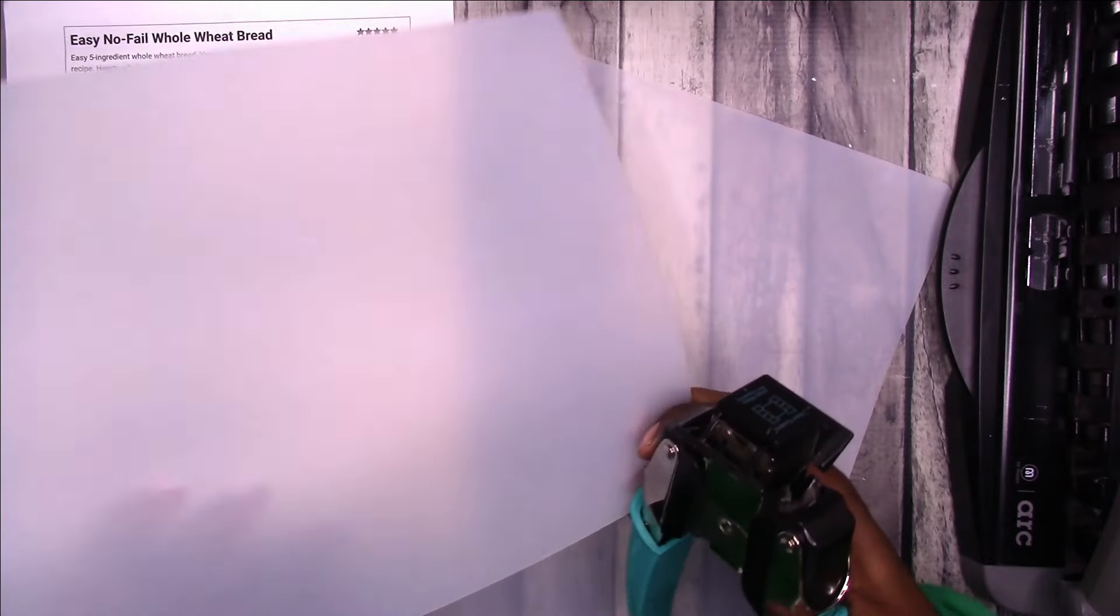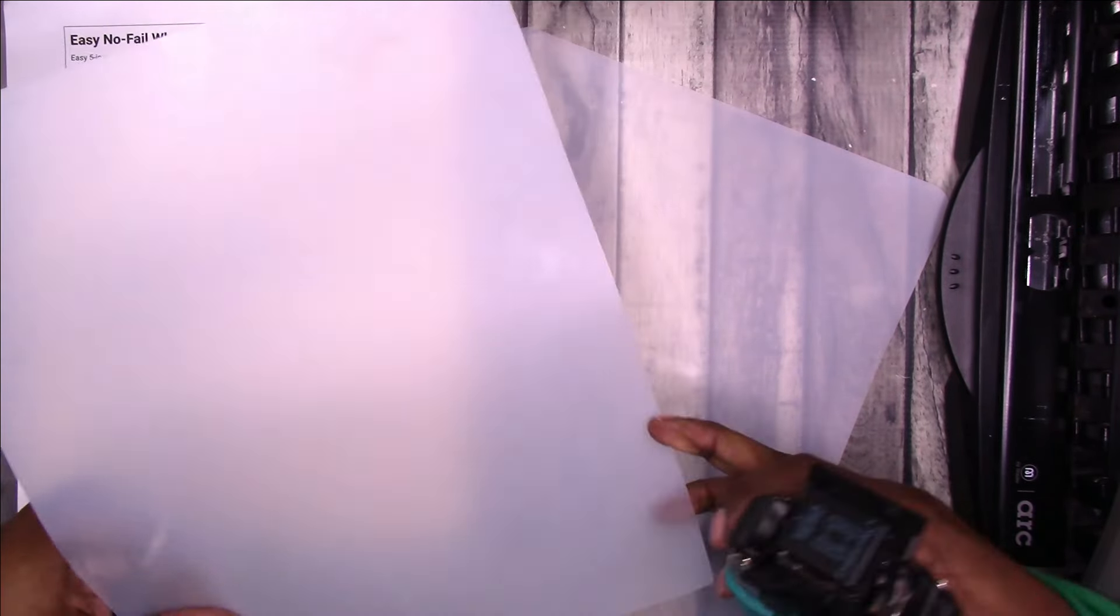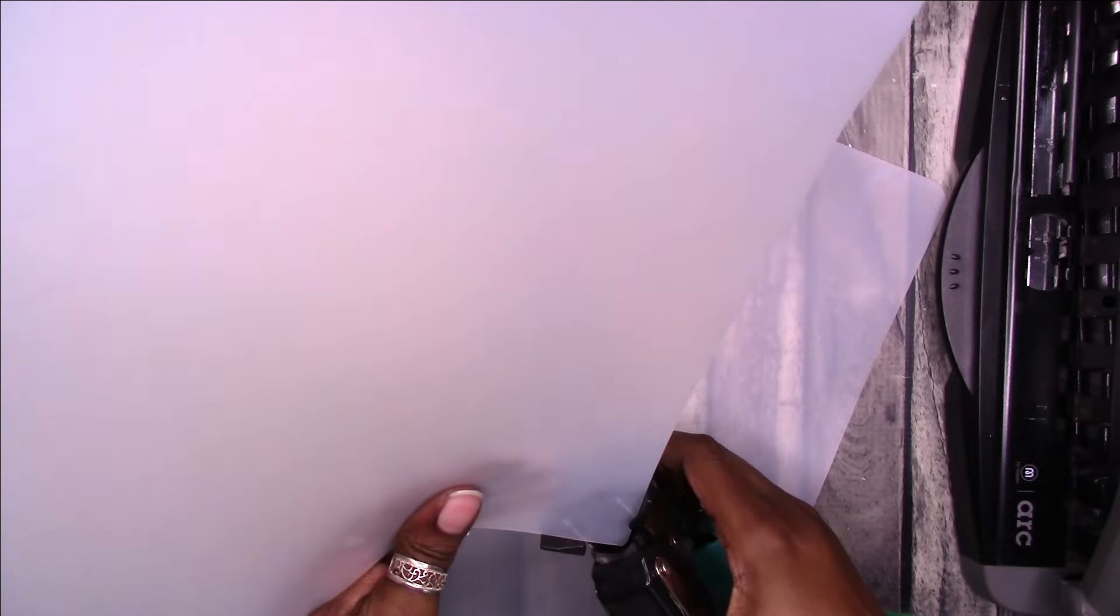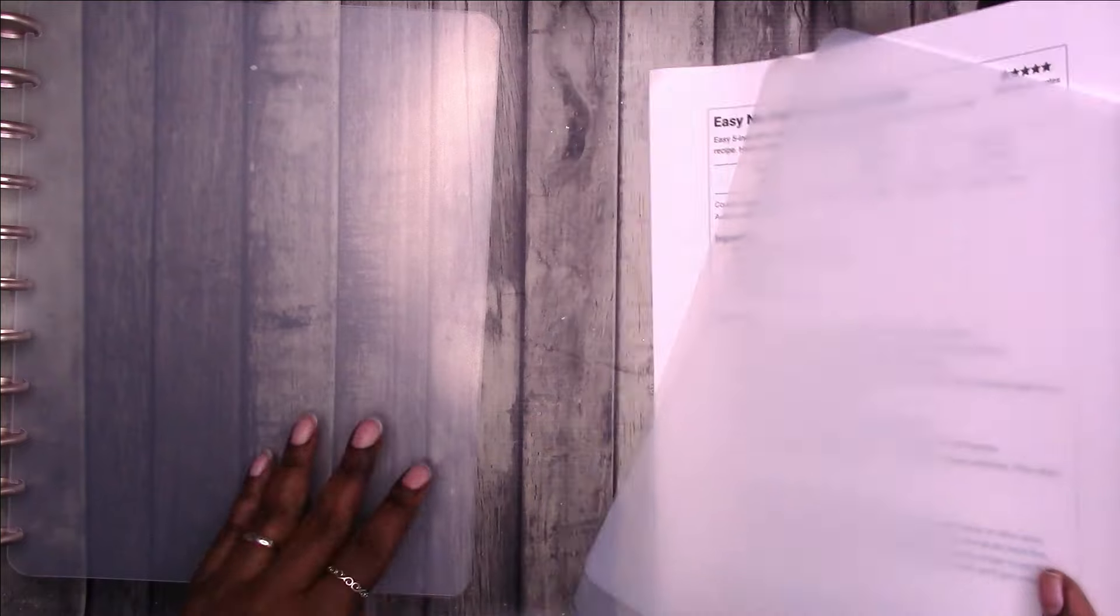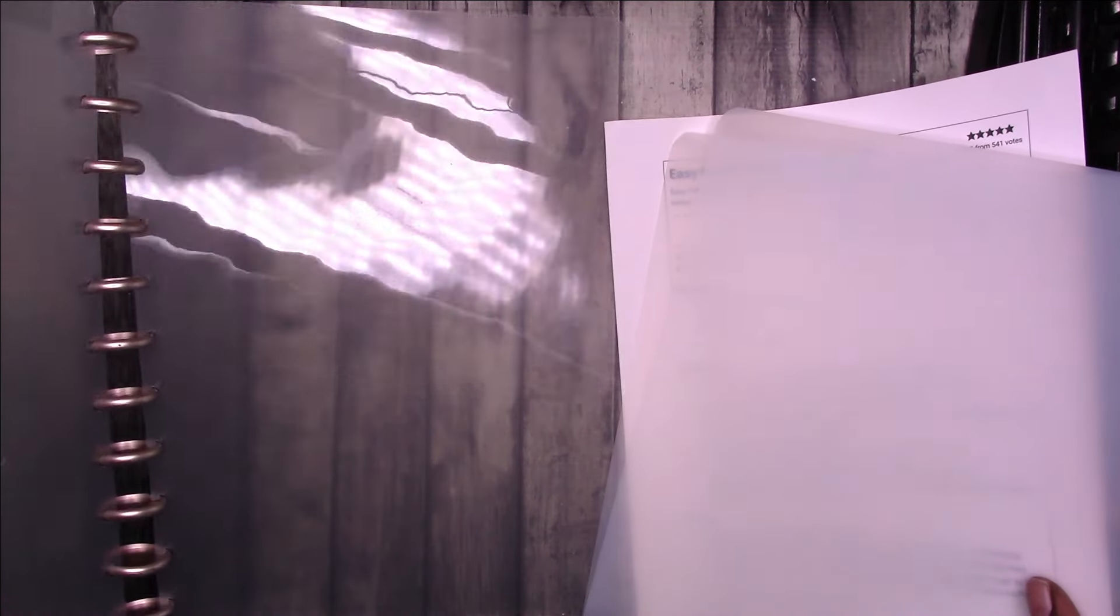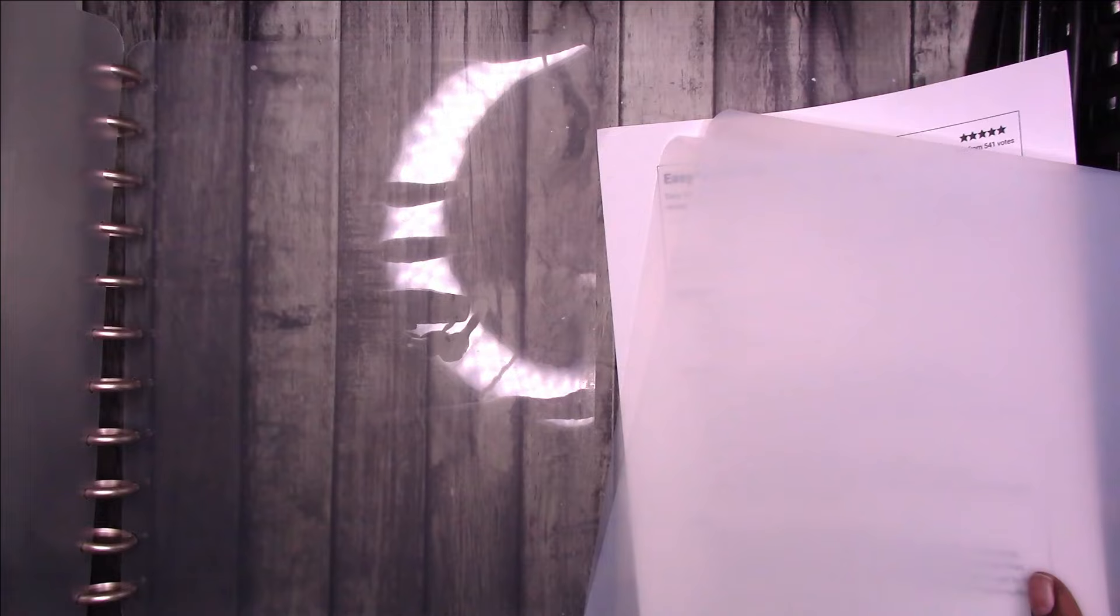And these are the latest mats that I purchased. So both sides are matte unlike some like these. I think these were older. They're matte on one side and glossy on the other side. You see the difference?